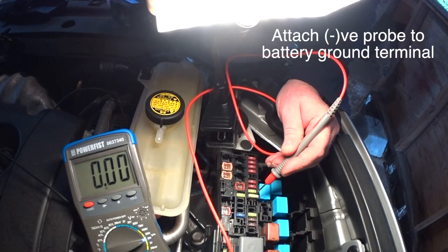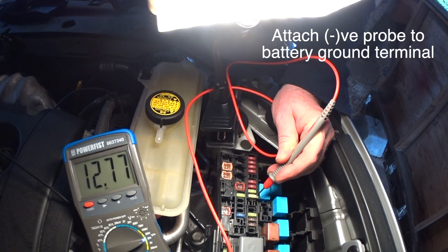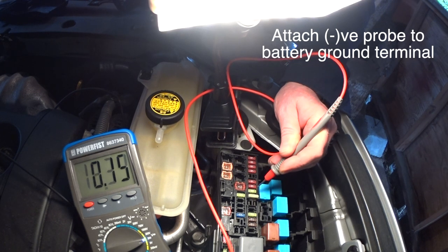Or, set the dial to DC volts, ground the black probe, and check for voltage at the top of the fuse.